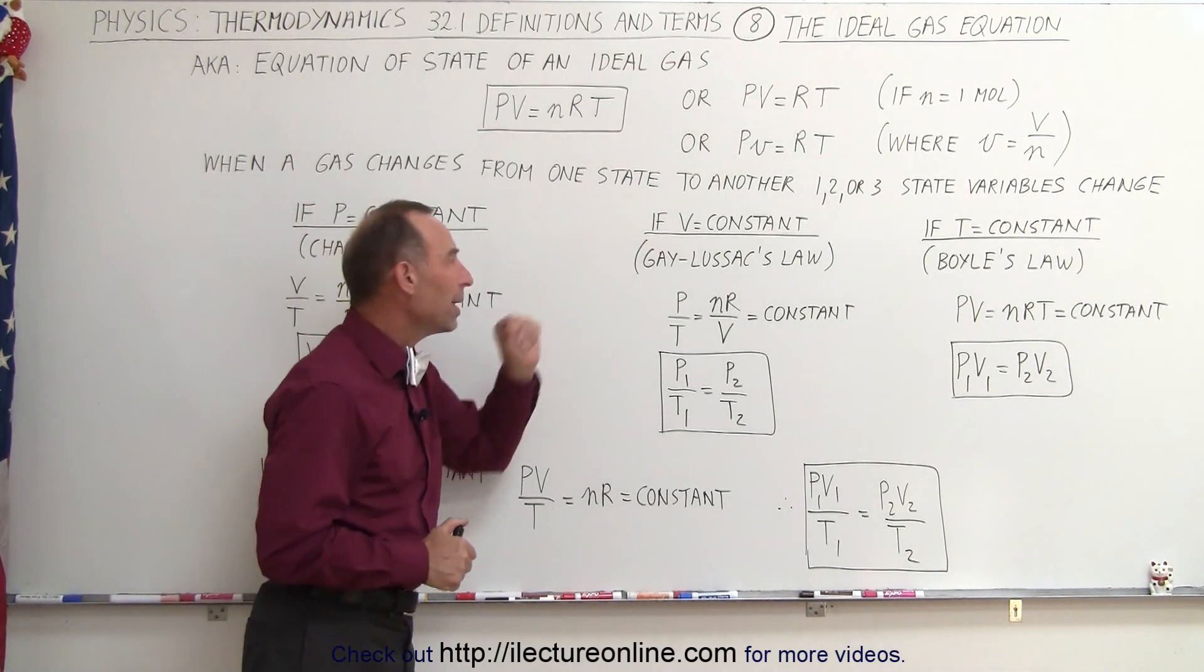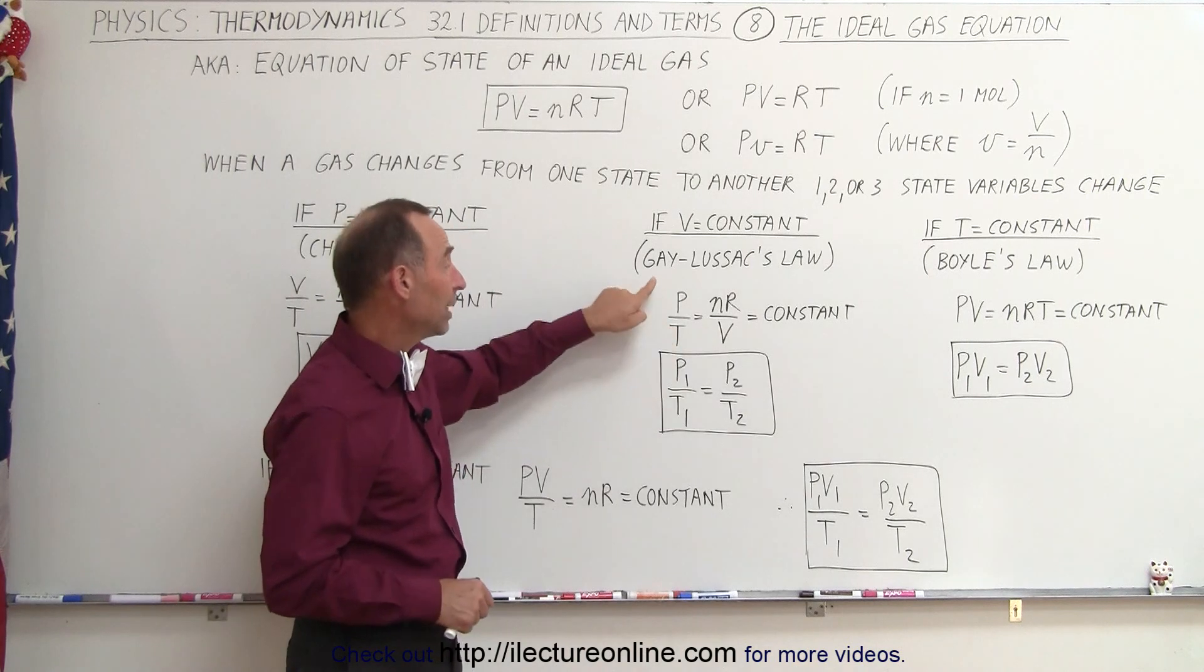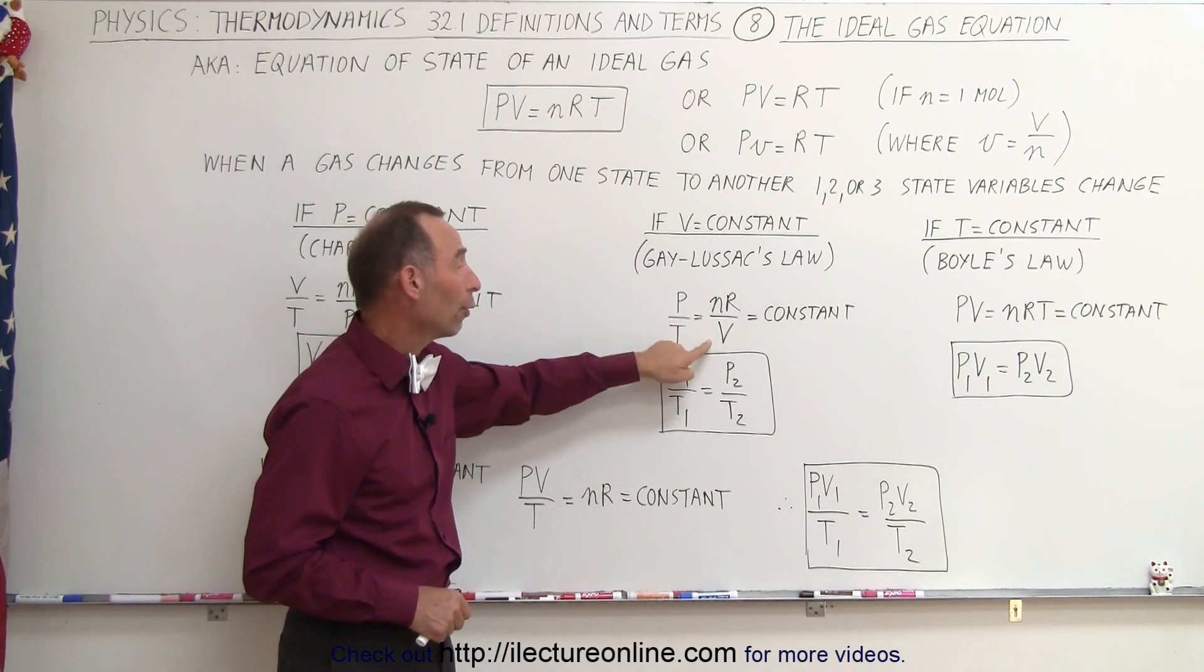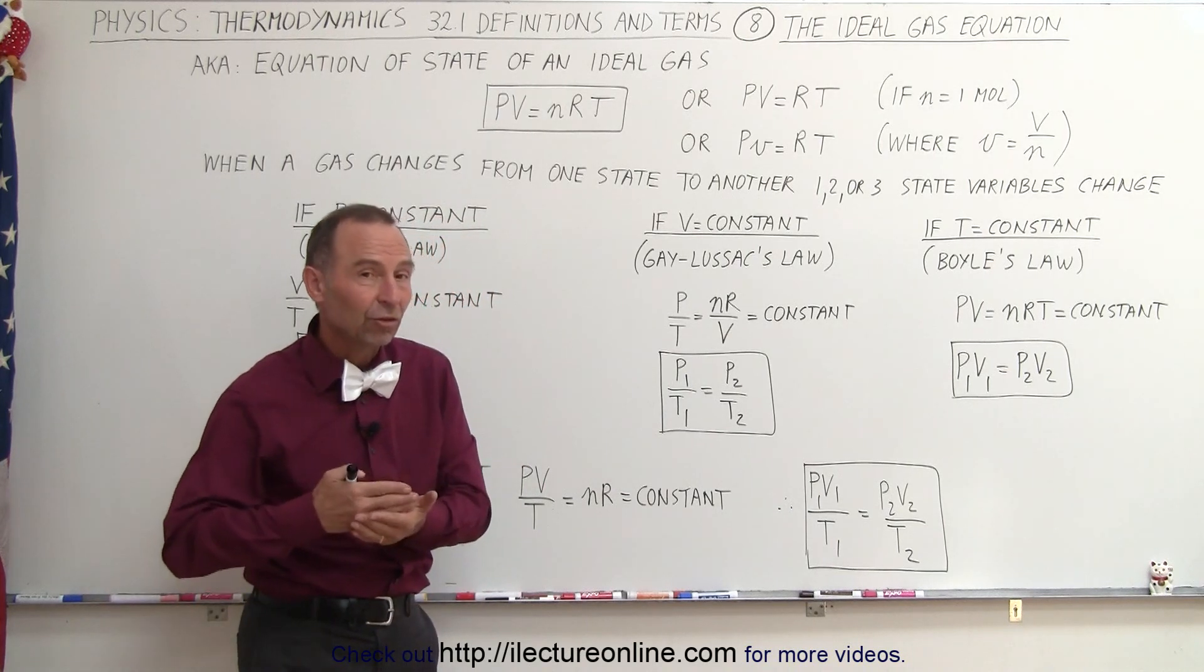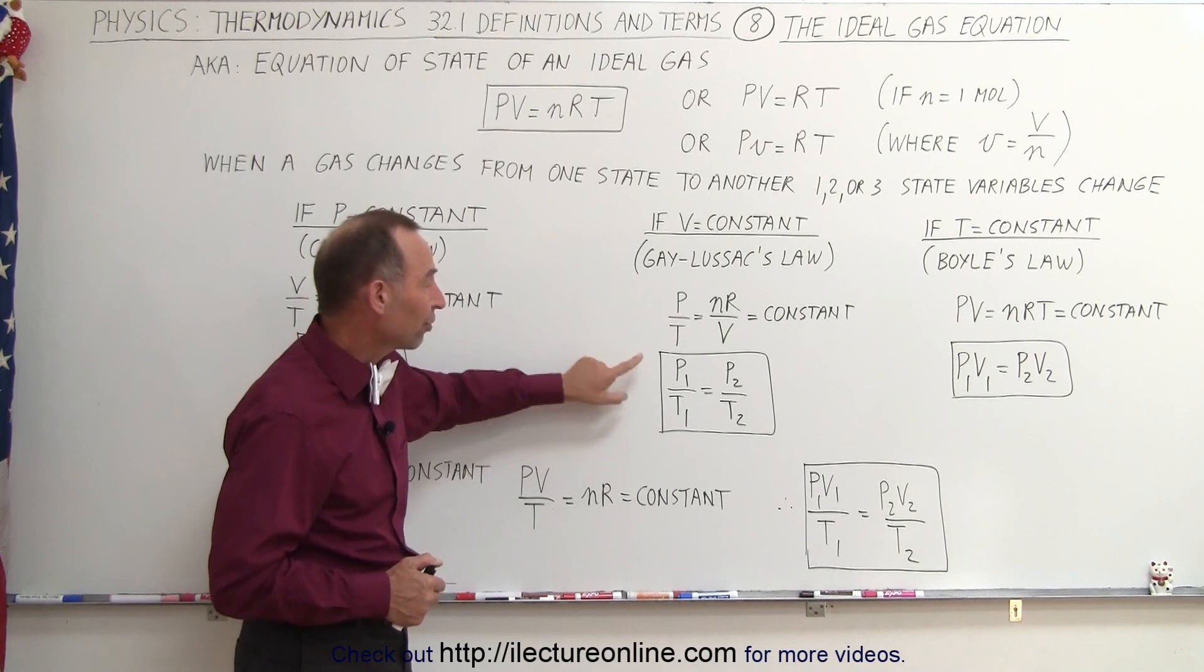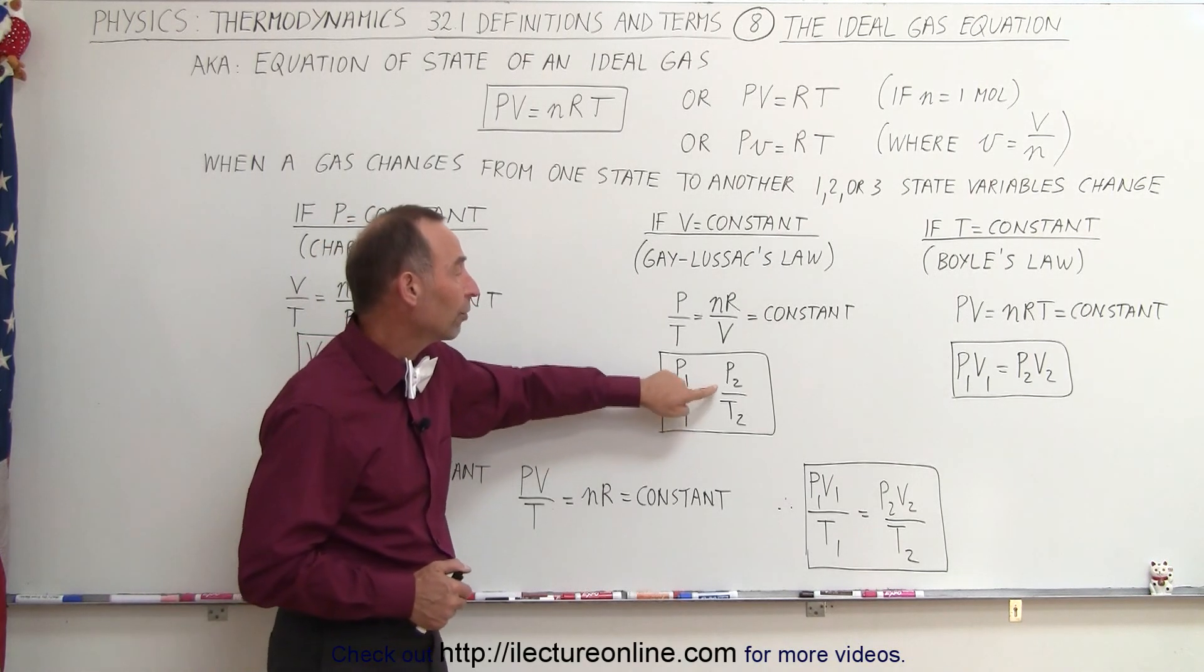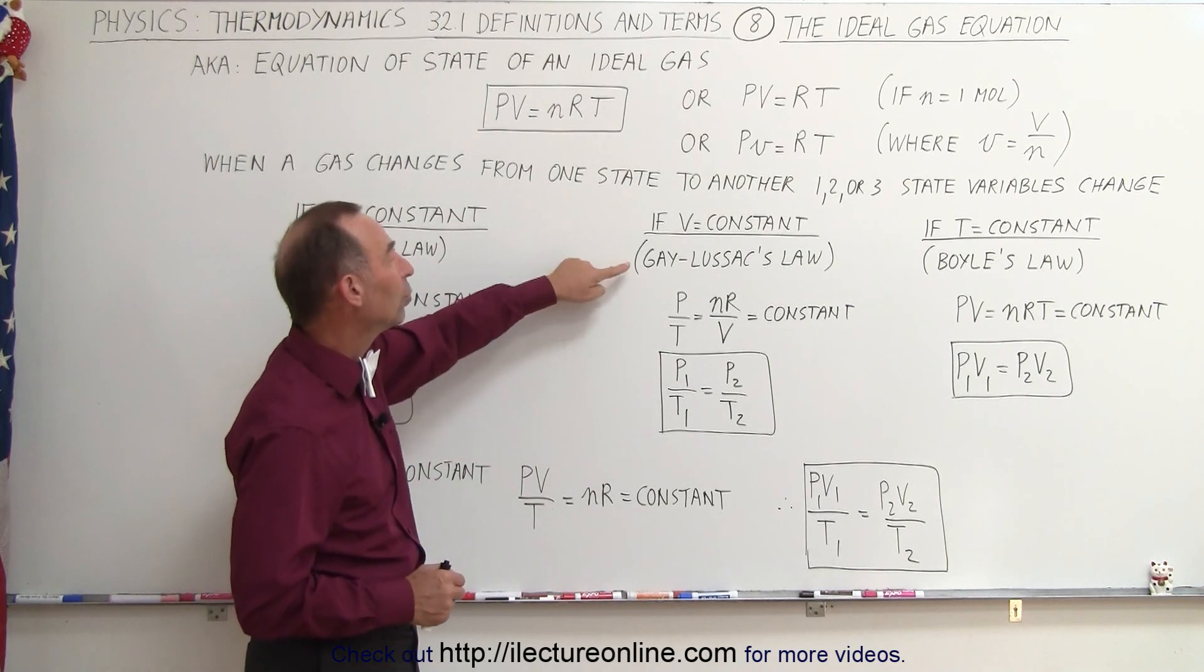If the volume remains constant, instead of putting the P down there, we're now going to put the V down there. So P divided by T is equal to nR over V, which is also a constant in this case. And so therefore, when there's a change of state, the ratio of the pressure to the temperature of state one must equal the ratio of the pressure to the temperature of state two. That is known as Gay-Lussac's law.